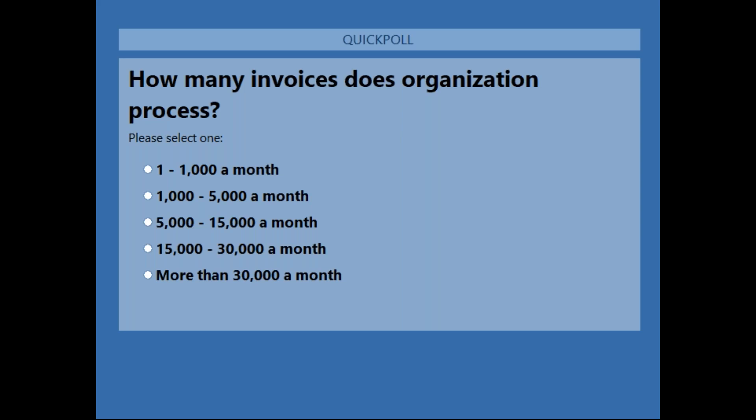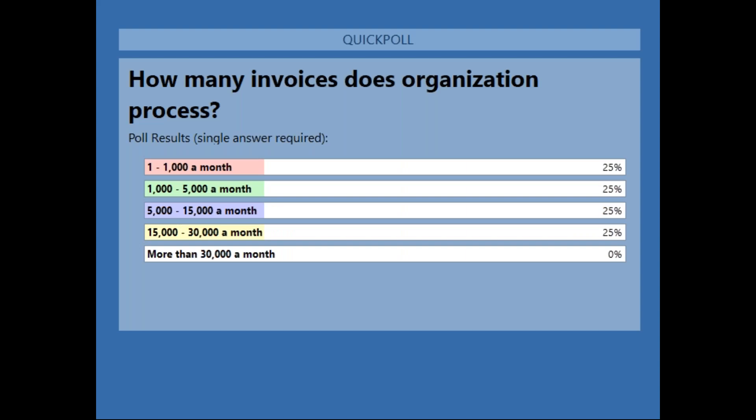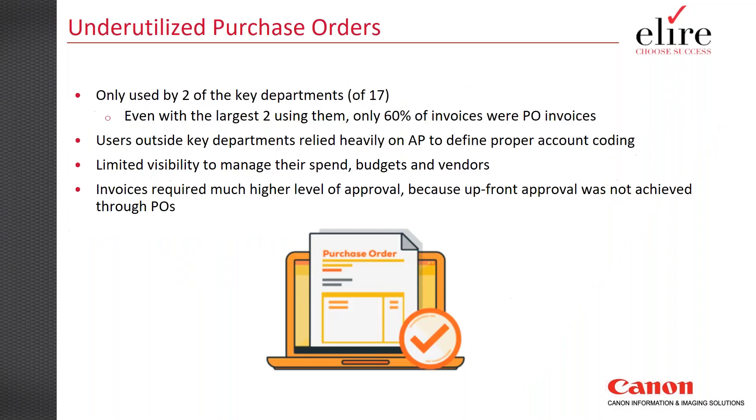We like to ask this question because invoice volume can depend on how you organize your purchase order world and how you organize your suppliers, and the technology Canon leverages, while it can handle any volume, does have some design decisions when looking at different volumes. It looks like we have a good mix here — some leaning towards the middle, but a nice range of different volumes in the group.